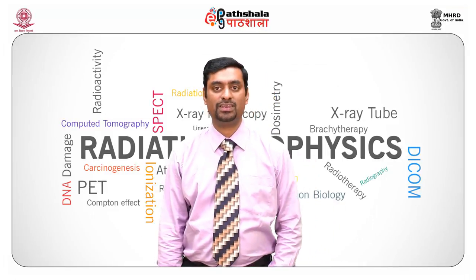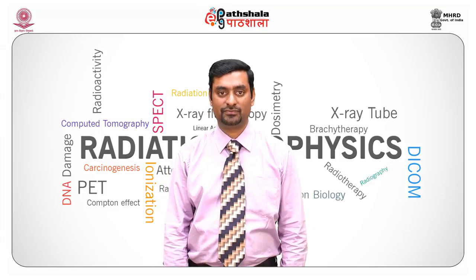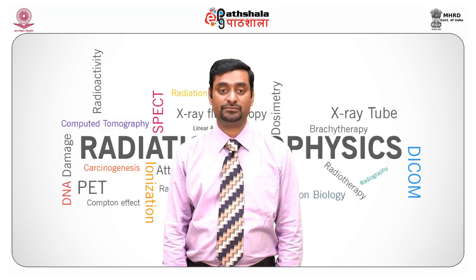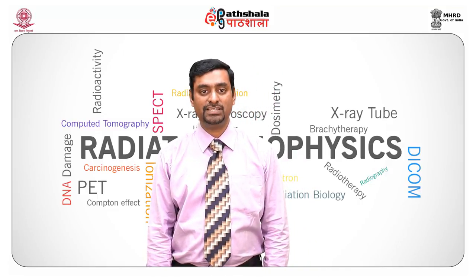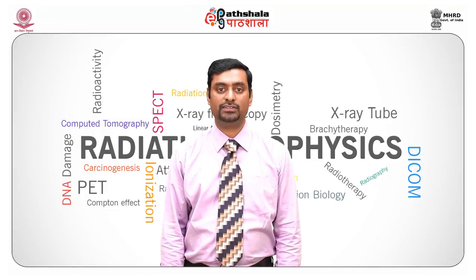Next we move on to the fluoroscopic imaging chain. Image intensifiers were introduced in the 1950s and allow fluoroscopic images to be visible under normal lighting conditions. The components of the fluoroscopic imaging chain include: a generator, x-ray tube, collimator, filtration, patient table, grid, image intensifier, optical coupling, video camera, and a monitor to visualize the image.